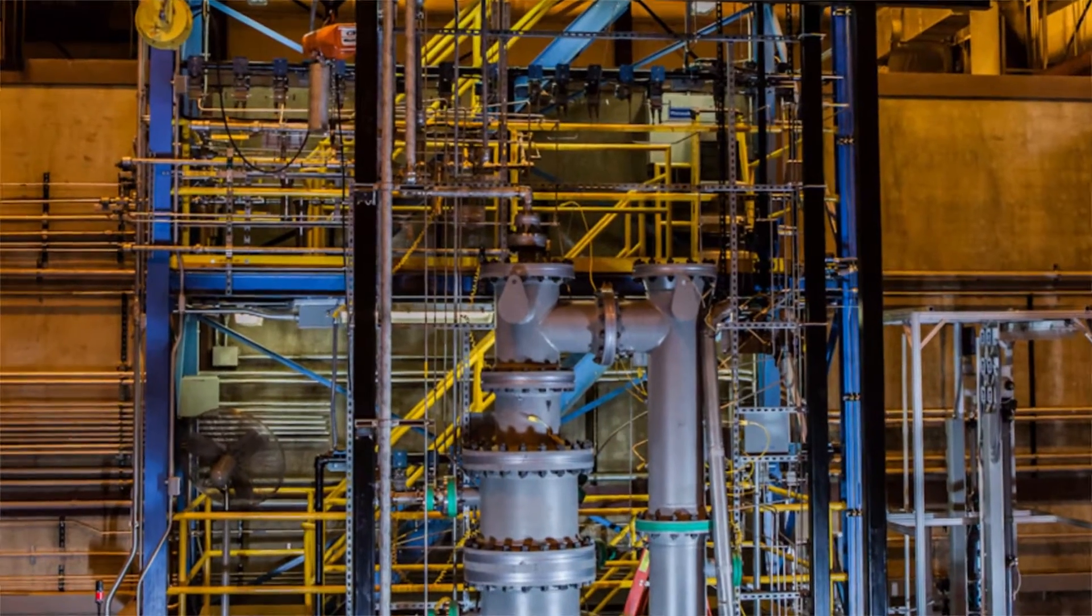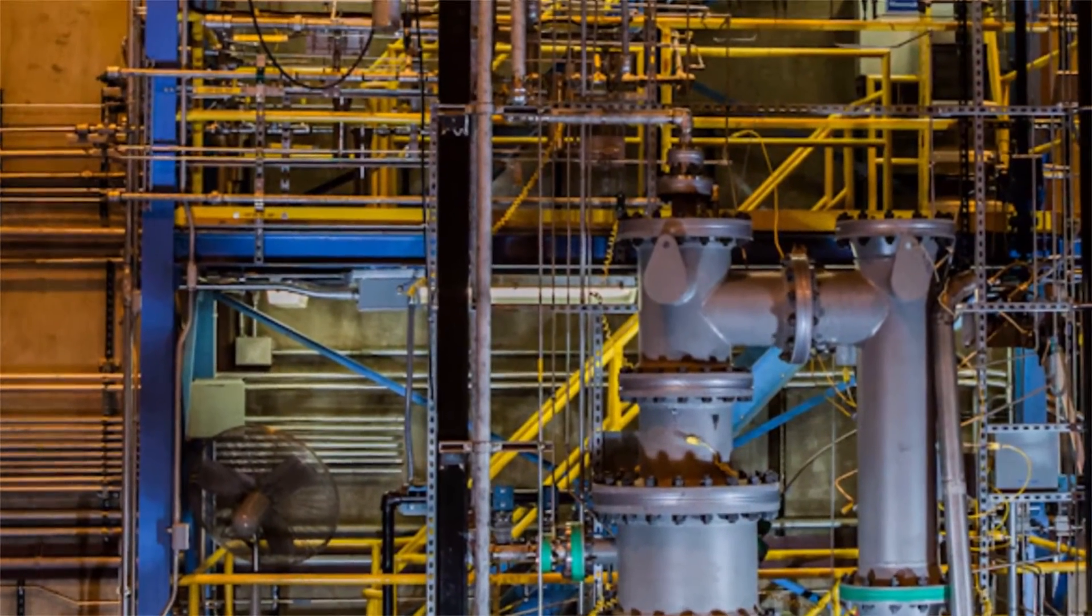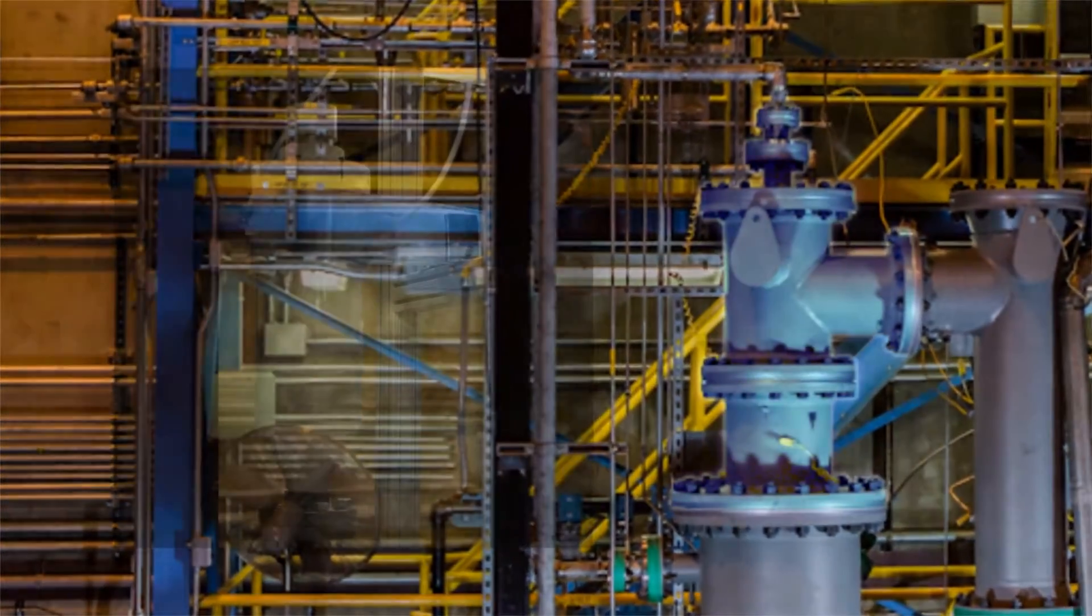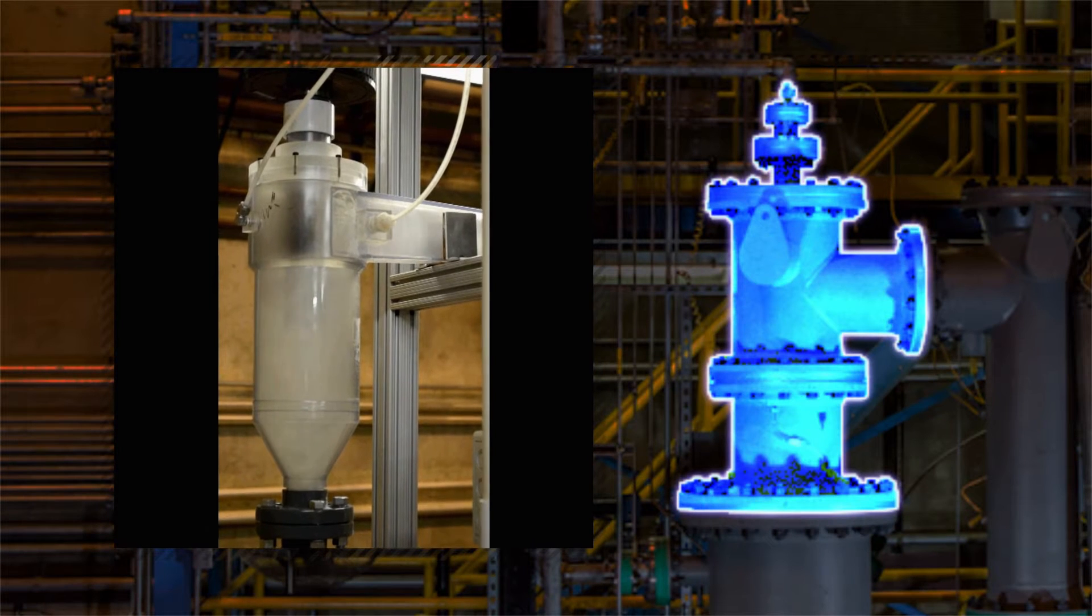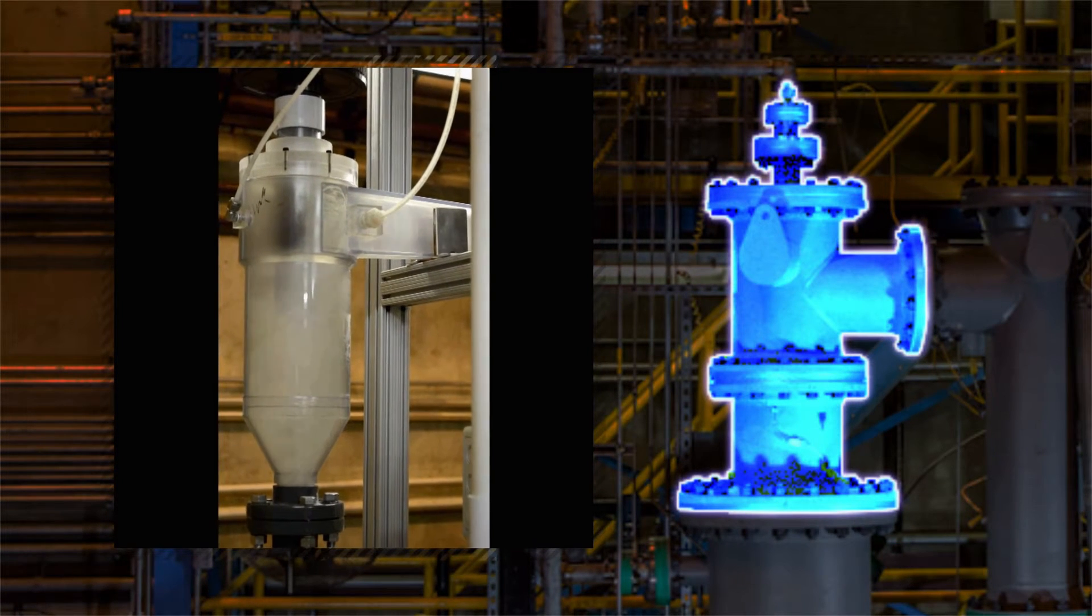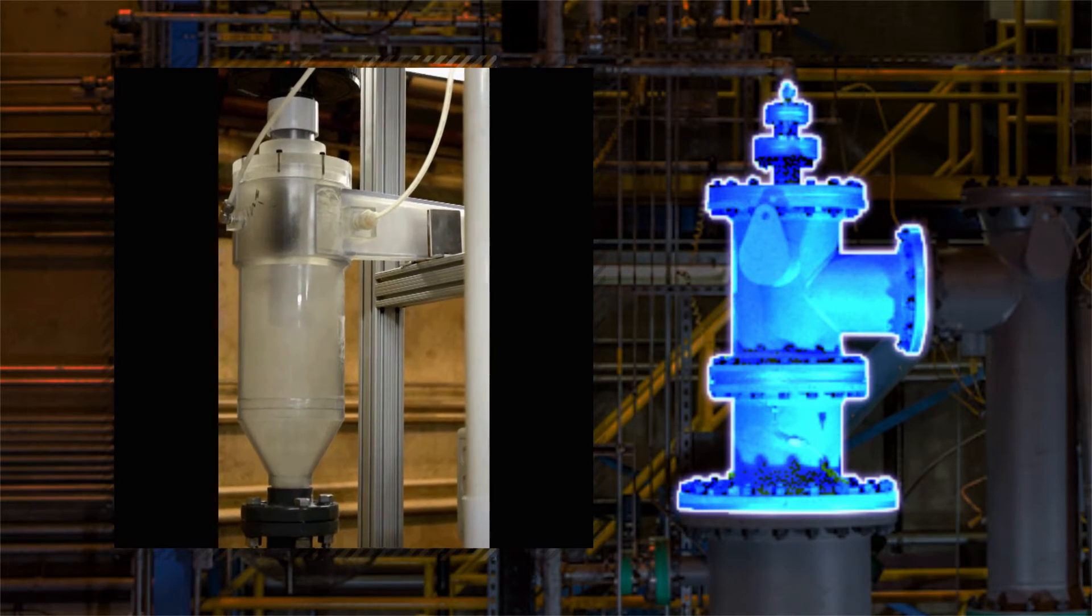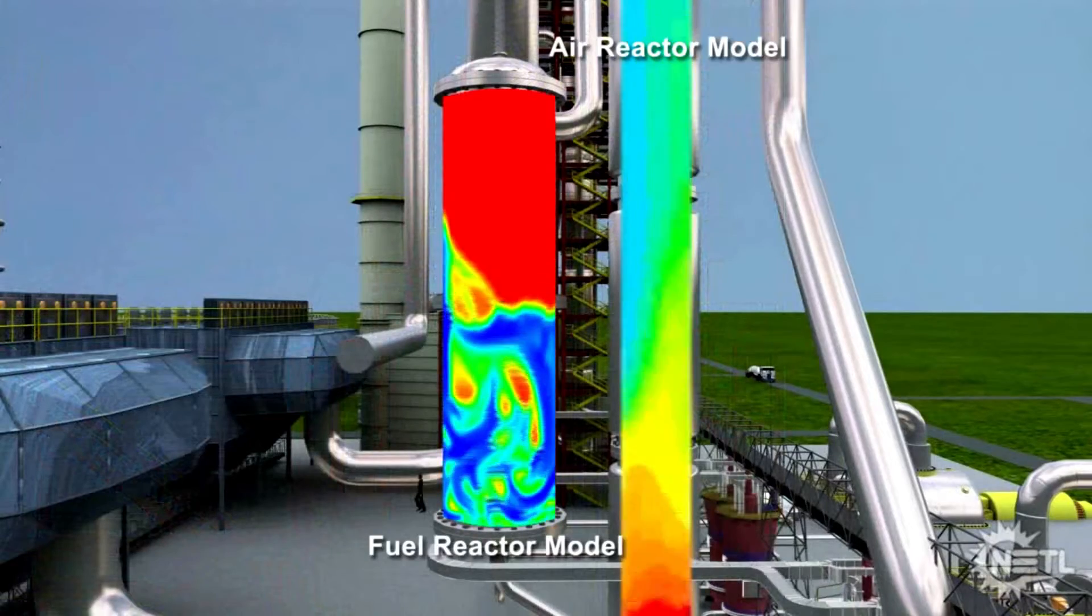After the oxygen carrier is oxidized in the air reactor, it is transported through a cyclone to separate the solid oxygen carrier from the air. The oxygen carrier is recycled to the fuel reactor to complete the cycle or loop.